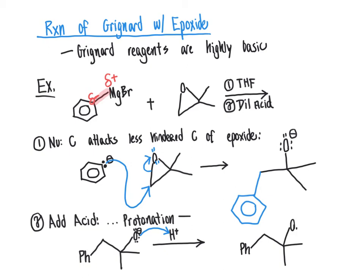Our final product of this reaction sequence has a hydroxy group, circled in blue. There are no stereocenters in this product, so we don't need to worry about drawing wedges or dashes. If there were stereocenters, we would need to show inversion of configuration, because this reaction behaves like an SN2 — the hallmark of SN2 is that the nucleophile attacks at the same time the leaving group leaves. That is exactly what's happening here: the nucleophilic carbon attacks as the leaving group breaks away, so there would be inversion of configuration at any stereocenter.